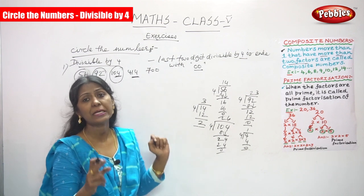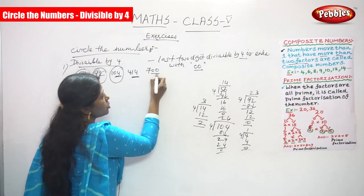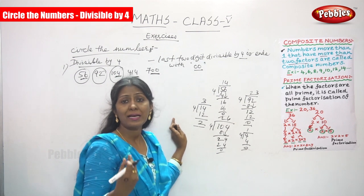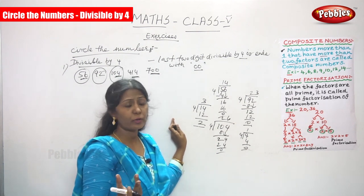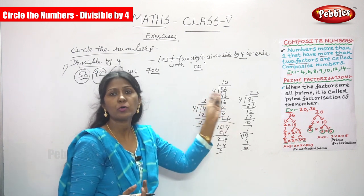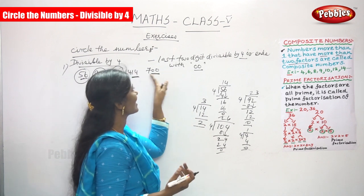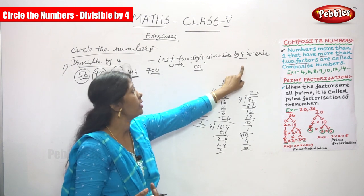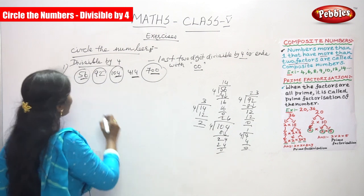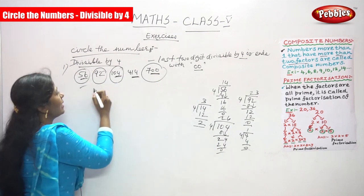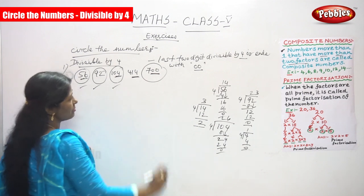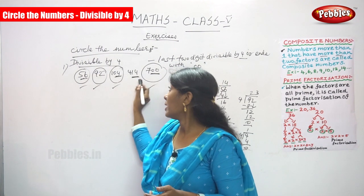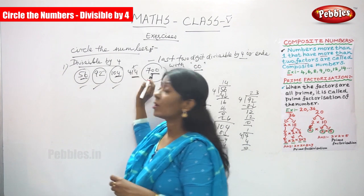The next number is 700. The last two digits are 00. The rule applies: 700 ends with 00, so it is automatically divisible by 4 — you can find out without any division or multiplication table. So, to summarize: 56, 92, 104, and 700 are divisible by 4 and should be circled. Only 414 is not divisible by 4.